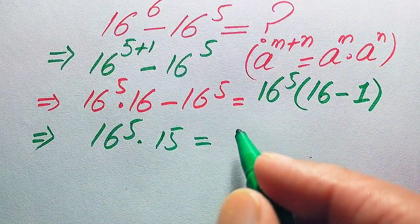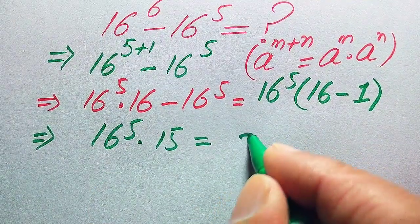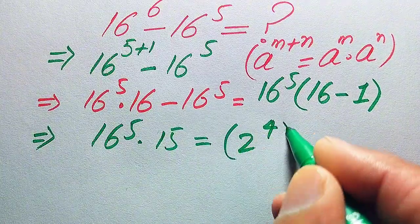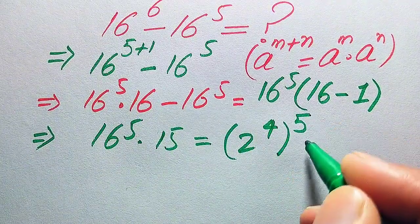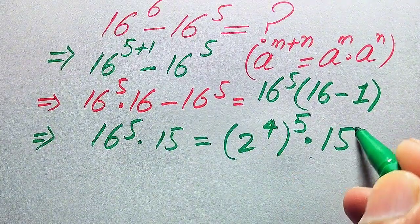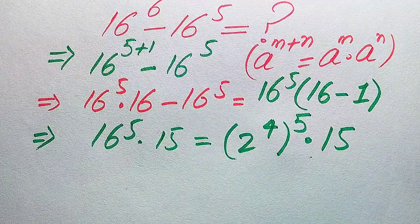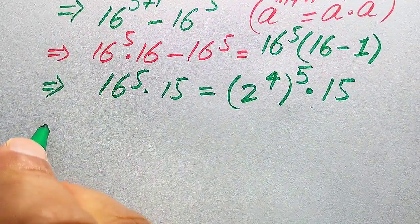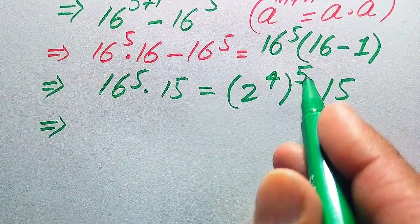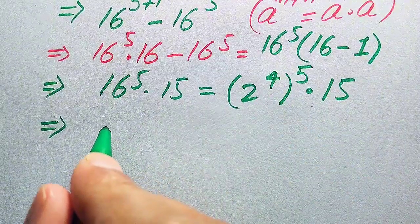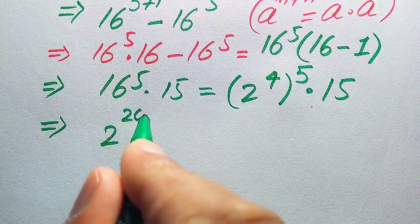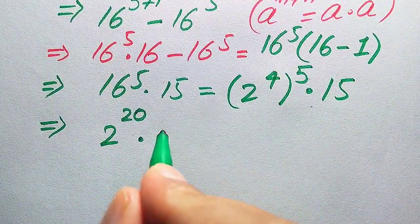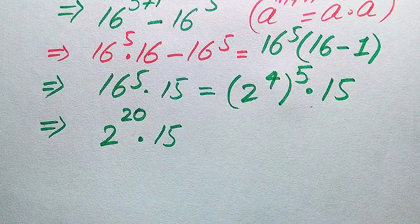In the next step, 16 minus 1 becomes 15, so we have 16 to the power of 5 into 15. We now write 16 in prime factor form: 16 equals 2 to the power of 4, and with the whole exponent of 5 we get 2 to the power of 4, raised to the 5th power, multiplied by 15.